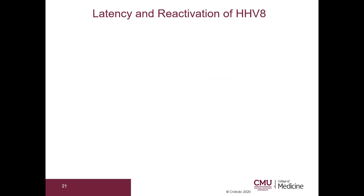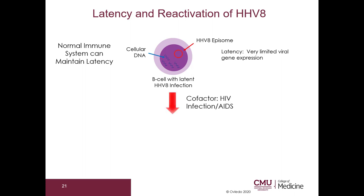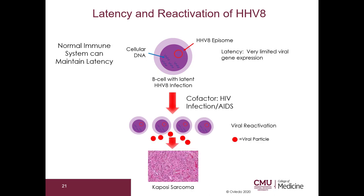I want to discuss one more time the latency and reactivation pathogenesis of HHV-8. Here is a B cell with a latent HHV-8 infection — the normal cellular DNA and the red circle represents an HHV-8 episome. In latency, there is very limited viral gene expression; the episome is just maintaining itself. A normal immune system can maintain latency. However, if there is some alteration in the immune system, for example HIV infection and AIDS, you can get viral reactivation, leading to increased numbers of infected B cells and increased viral particles, which can lead to Kaposi's sarcoma. Note that the precise mechanism is unknown because Kaposi's sarcoma is a proliferation of vascular cells and not B cells; however, this demonstrates general principles of viral latency and reactivation resulting in a tumor.